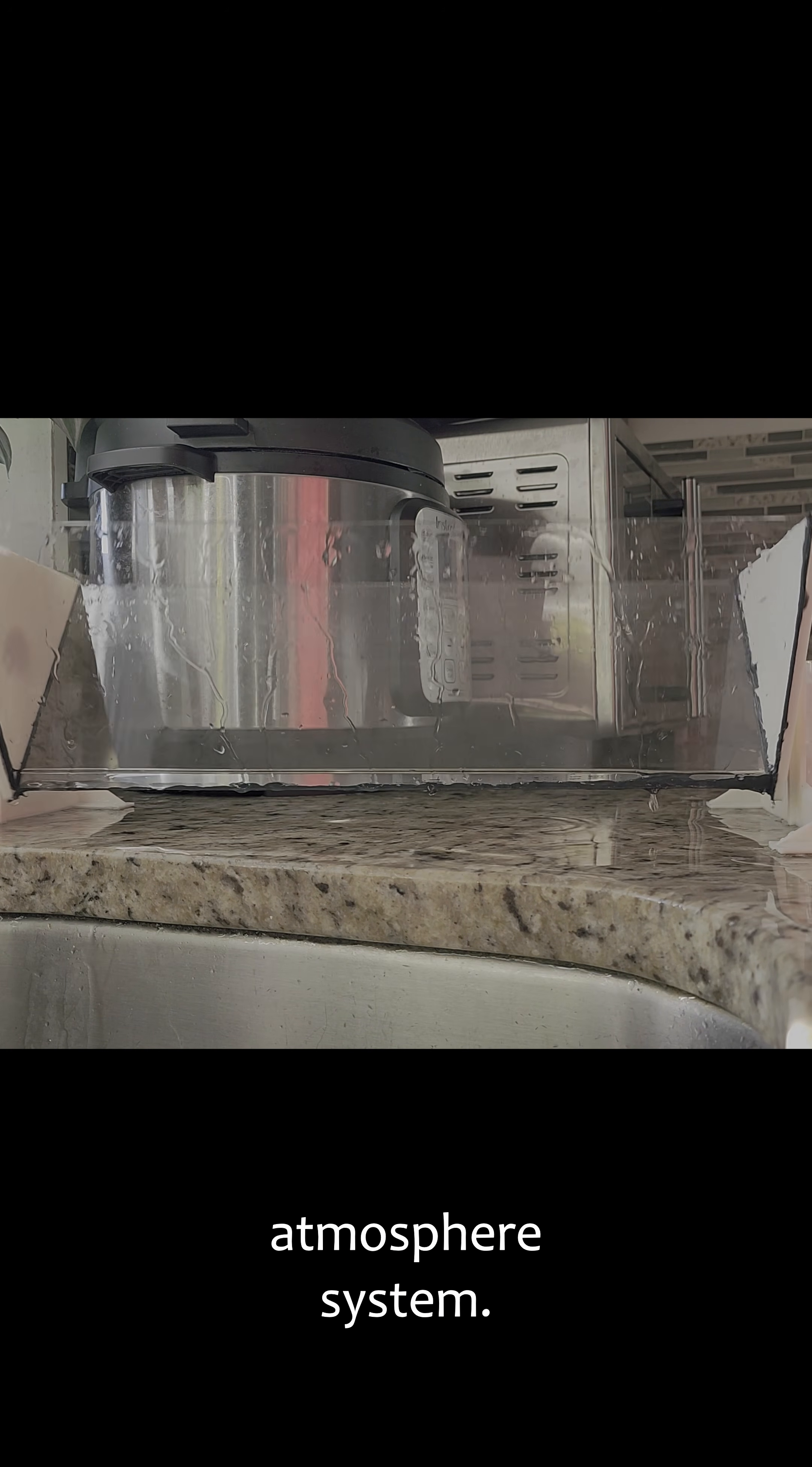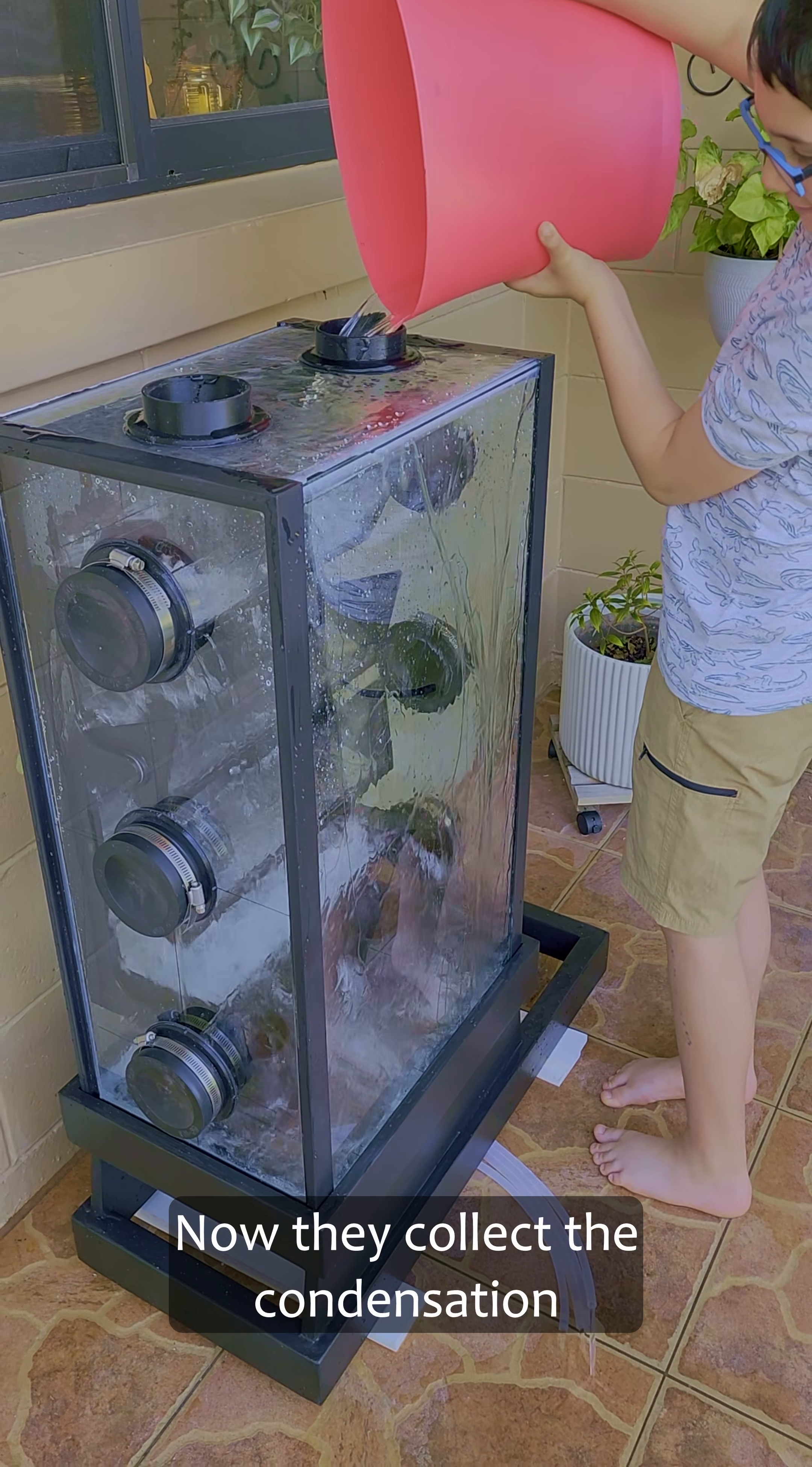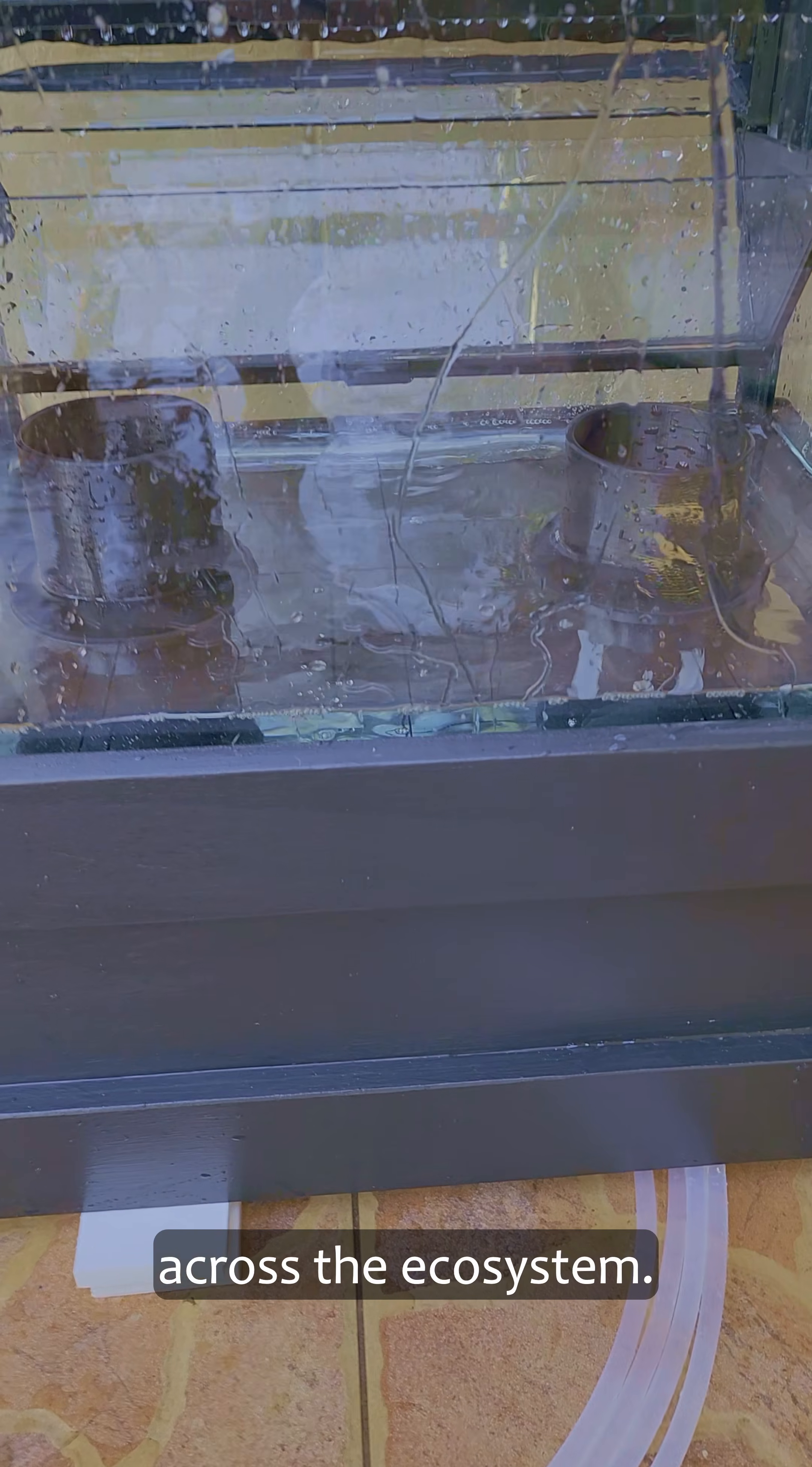So I built it into the atmosphere system. The reservoirs sit on nylon and glass bearings that keep the rotation smooth and prevent any material from leaching into the ecosystem. Now they collect the condensation that forms on the cold back glass, and when the reservoirs reach that tipping point, the last drop of water is enough to flip it and send a cascade of rain across the ecosystem.